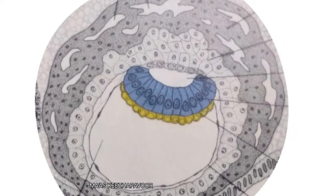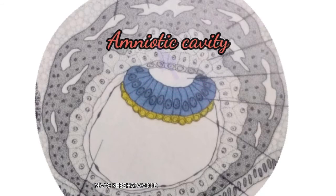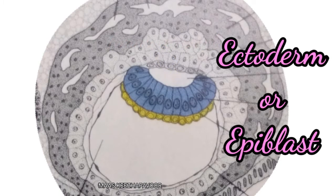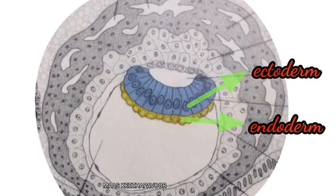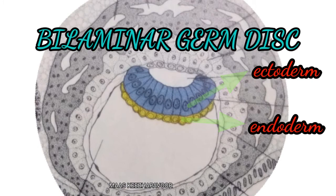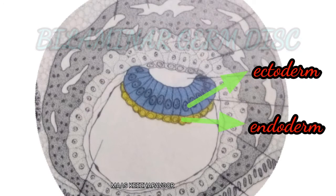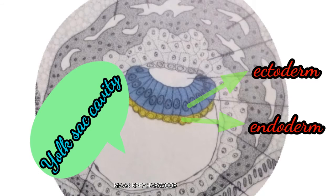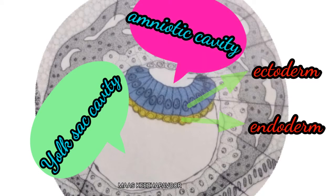This cuboidal cell layer is the endodermal layer, which is the first formed layer, also known as the hypoblast layer. Then the columnar cells get arranged as a layer adjacent to the amniotic cavity, called the ectodermal layer or epiblast layer. The cells of each germ layer — that is, the endodermal and ectodermal layers — form a flat disc called the bilaminar germ disc. Remember, the endoderm is related to the yolk sac cavity and the ectoderm is related to the amniotic cavity, lined by amniogenic cells.